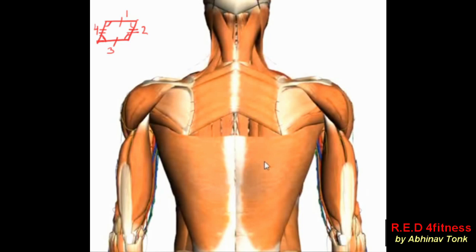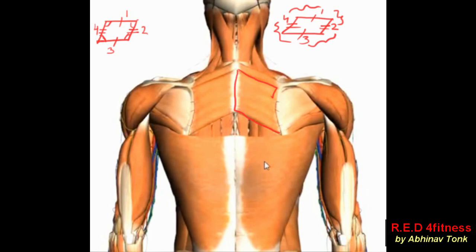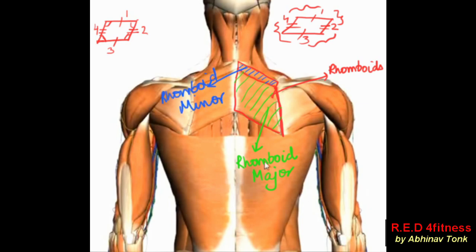A rhomboid is also a parallelogram, but its adjacent sides are not equal — that is the difference between a rhombus and a rhomboid. The term rhomboid for the rhomboid muscle is derived from this geometrical shape. The larger muscle group shown here is the rhomboid major, and the smaller muscle group above it is the rhomboid minor.